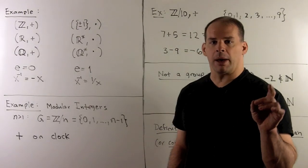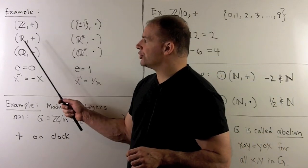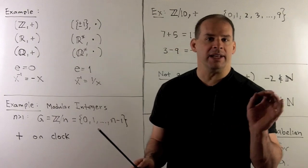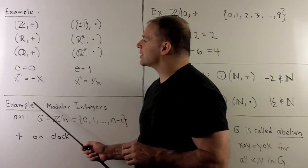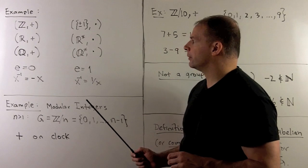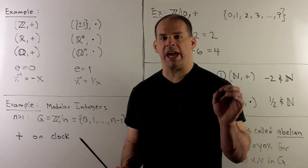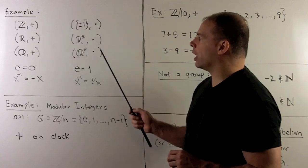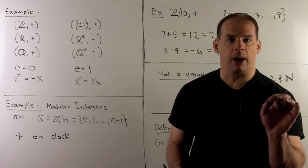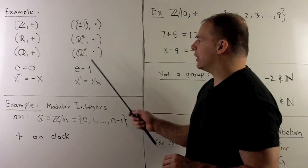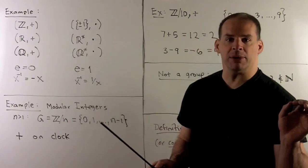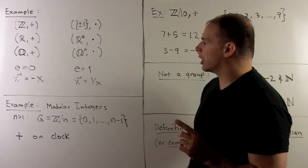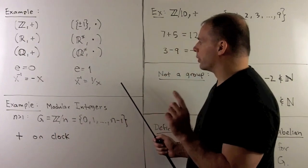For some familiar examples of groups, consider integers, the reals, and the rationals with addition. The identity element is 0, and the inverse of the element x is -x. If we instead consider multiplication, we have the two-element group {+1, -1}, we have ℝ* (the real numbers without 0), and we have ℚ*. Here, the identity element equals 1, and the inverse of the element x is 1/x. I'll leave it to you to verify the other properties.